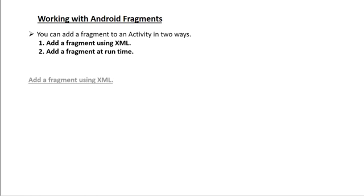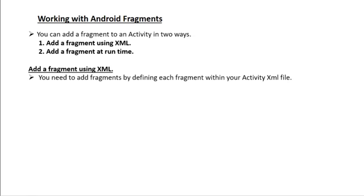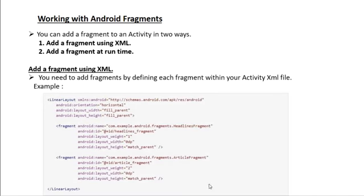Let's learn each approach. To add a fragment using XML, you need to define each fragment within your activity's XML file. Here is a simple example of a layout that contains two fragments. You specify a fragment element in your layout file. The name attribute indicates the class corresponding to that fragment — for example, HeadlineFragment for the first fragment. You also specify an id and other parameters like width and height for each fragment.